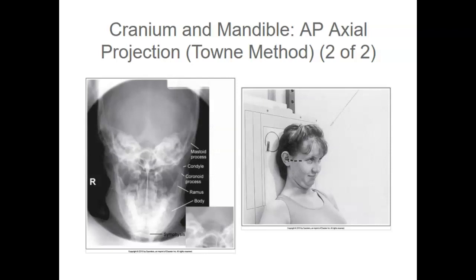For the mandible there are a few extra items included in the image analysis guidelines. The dorsum sellae and posterior clinoids are at the level of the superior foramen magnum, and the mandibular condyles and fossae should be clearly demonstrated with minimal mastoid superimposition. A point midway between the mandibular rami is at the center of the exposure field, and the mandible and temporomandibular fossae are included within the exposure field.